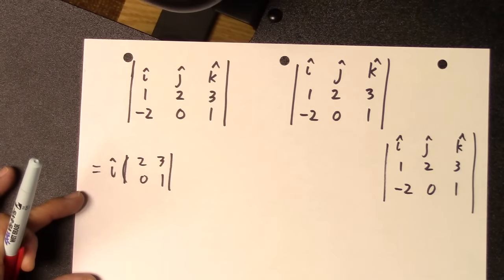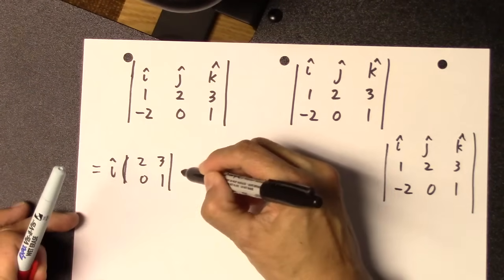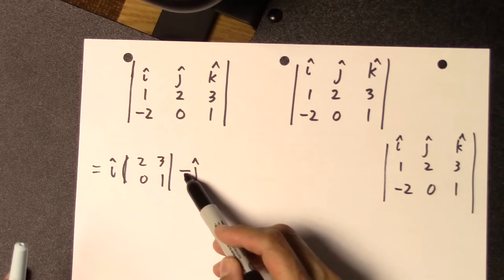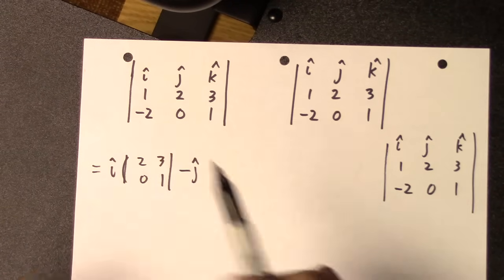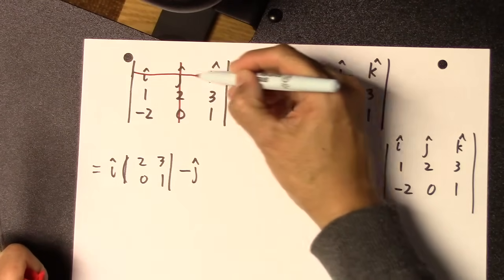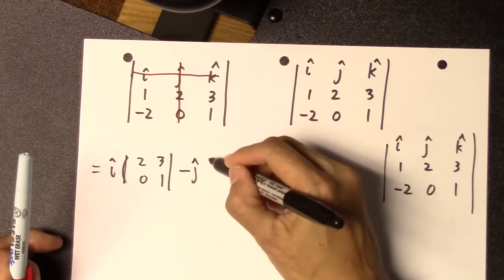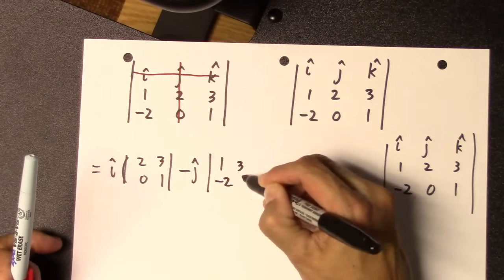And then the next thing you have to do is write the j hat part of it. So what you do is you write minus j hat. You have to have that minus there, just do it. And then you cross out the column and row containing the j hat, and then write the box of numbers that's remaining, which is 1, 3, minus 2, 1.